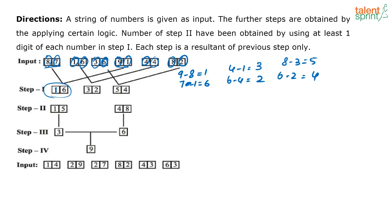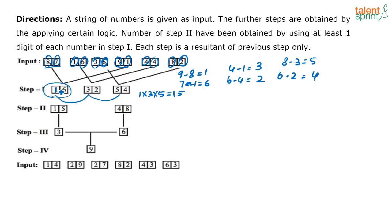Now let's look at Step 2. In the second step, they have done multiplication — specifically, the product of all the first digits and all the second digits. The first numbers in each box are 1, 3, and 5. So 1 × 3 × 5 equals 15.